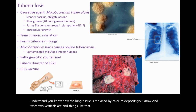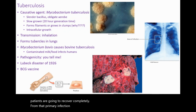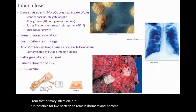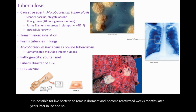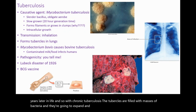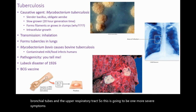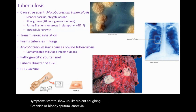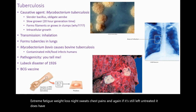Most treated patients recover completely from that primary infection. But it is possible for live bacteria to remain dormant and become reactivated weeks, months, or even years later. With chronic secondary tuberculosis, the tubercles are filled with masses of bacteria, they expand and cause cavities in the lungs, and drain into the bronchial tubes and the upper respiratory tract. More severe symptoms start to show up: violent coughing, greenish or bloody sputum, anorexia, extreme fatigue, weight loss, night sweats, and chest pains. If left untreated, it has a 60% fatality rate.